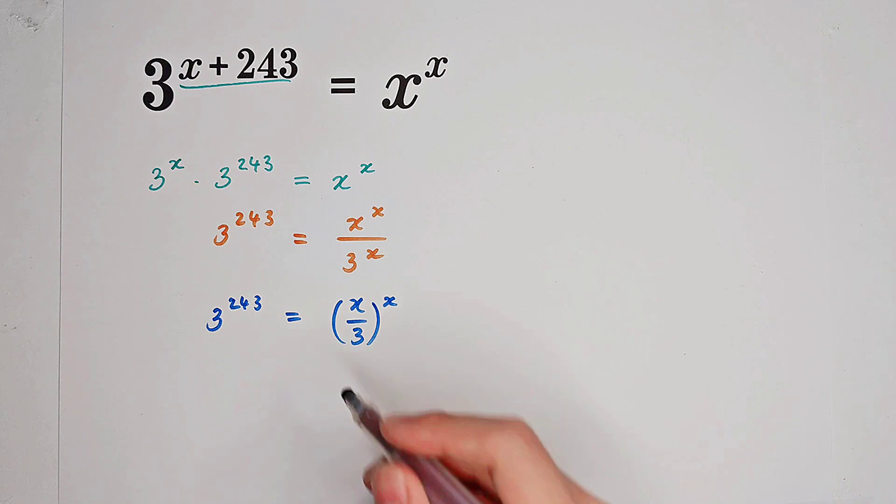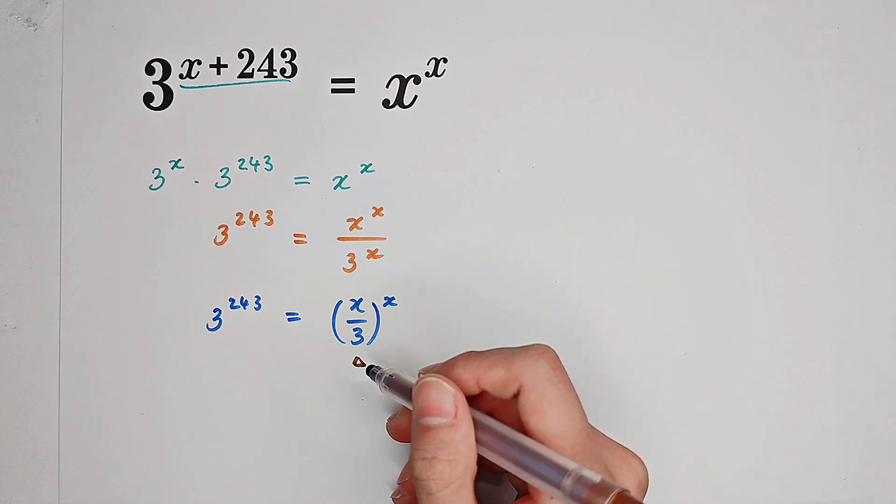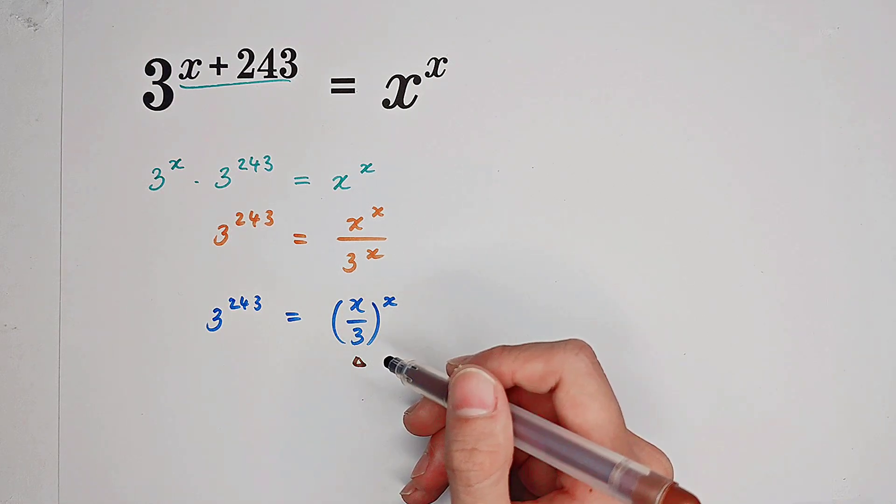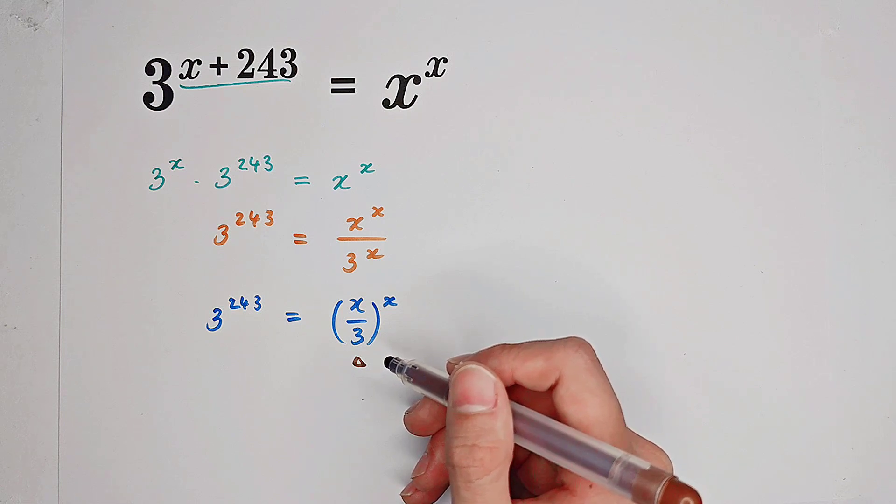What shall we do now? We have x over 3 as the base. I'm going to take both sides to the power of one-third.